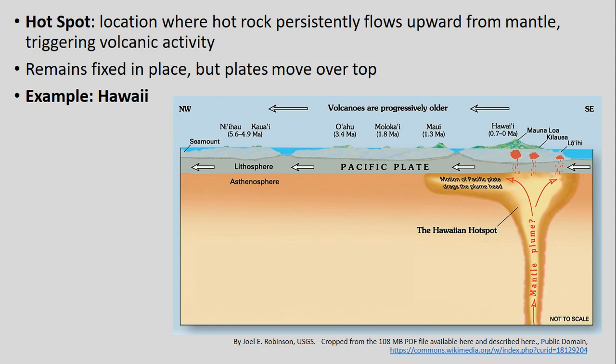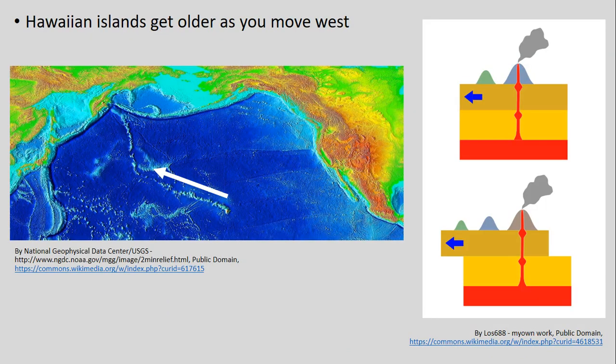The idea here is that the upward plume — that mantle plume emitting magma up to the earth's surface — remains fixed in place, while our plates move over top of it over time. We get an example like Hawaii, where we get this whole chain of islands within the Pacific Ocean, where our lithospheric plates are moving across over that fixed hot spot.